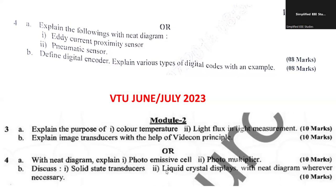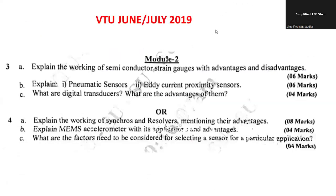With a neat diagram, explain the photo emissive cell and photo multiplier — based on photonics concepts. Discuss solid state transducers and liquid crystal display with a neat diagram wherever necessary — 5 plus 5 marks, totaling 10 marks. For June-July 2019: explain the working of a semiconductor strain gauge with its advantages and disadvantages.